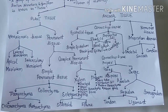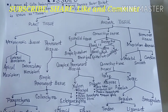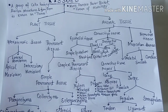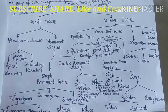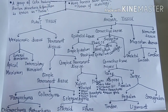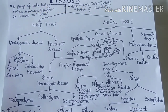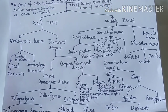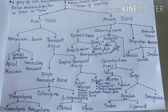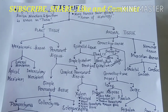Permanent tissue also has a second category: complex permanent tissue, also known as vascular tissue, conductive tissue, or conducting tissue. This complex permanent tissue is subdivided into two categories: xylem tissue and phloem tissue. The name 'complex' is because it is made up of more than two different types of cells — not just similar cells.